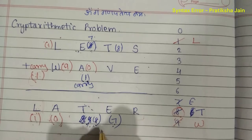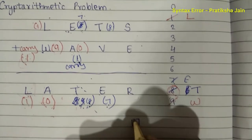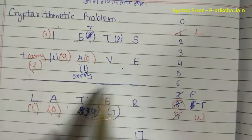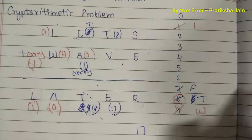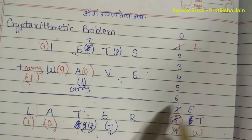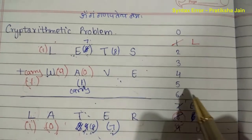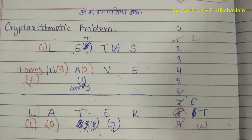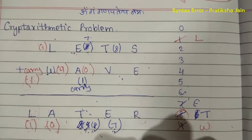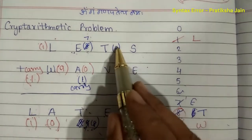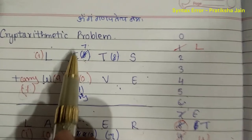Here there is one carry and here it is seven, meaning the sum should be seventeen altogether. By adding two numbers I should get seventeen — one and seven. The highest remaining number is six. But eight plus six gives fourteen, and not seventeen, so this calculation is wrong. That means we can't take E as seven and T as eight.